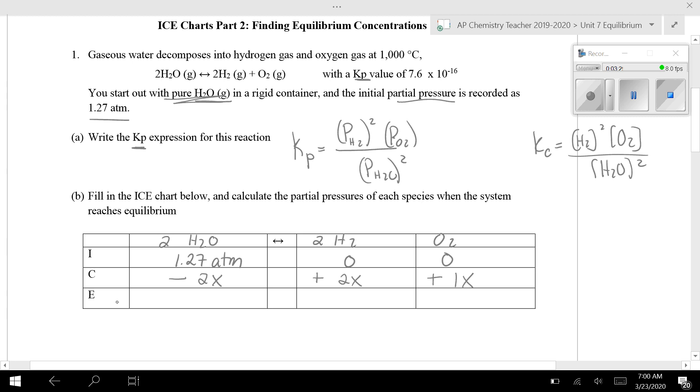So my equilibrium value I get by adding together initial plus change. So this is 1.27 plus negative 2X. So that's this. This is 0 plus 2X. And that's this is 0 plus 1X. So this is what I know about my equilibrium values. I don't know what they are, but I know that this is 2X, this is X. And I can go and I can plug these into my K expression.